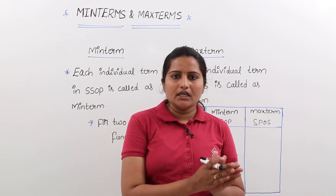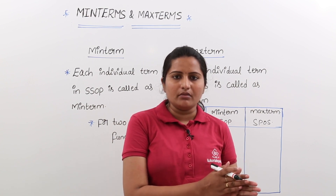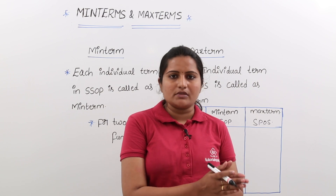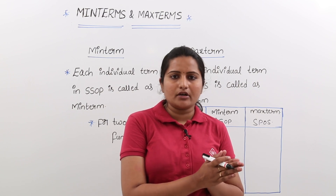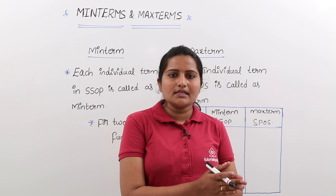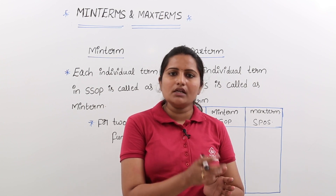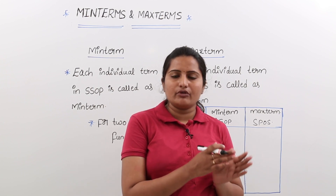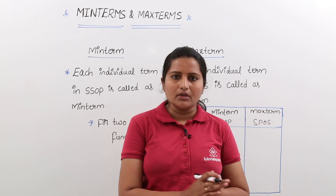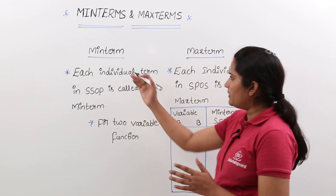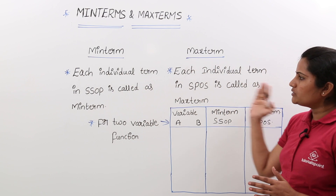In the same way, each individual sum term in SPOS form — standard POS, standard product of sums form — is called a max term. Each individual sum term in SPOS form is called a max term. This is the definition for min term and max term.